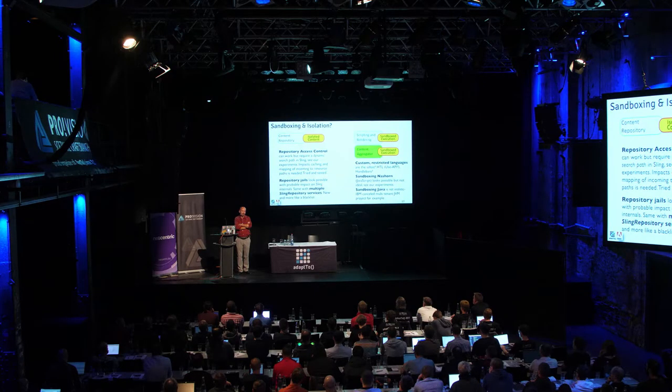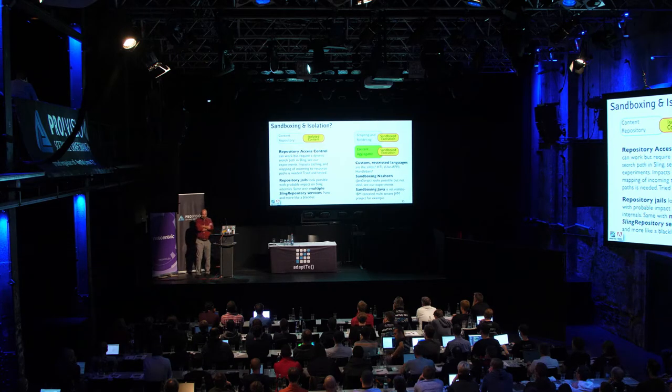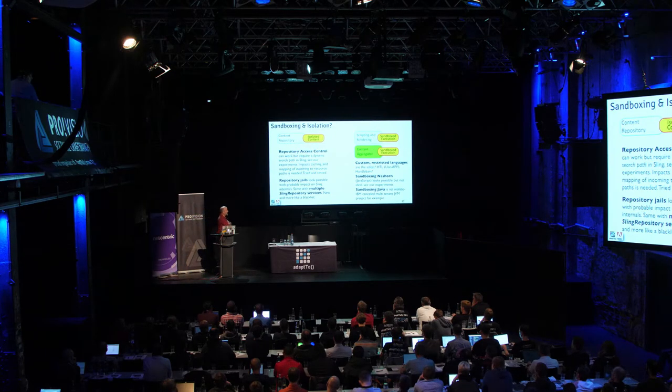I've also been looking at sandboxing Nashorn, the JavaScript engine in Java since Java 8. It's possible but not ideal — I'll show that in the experiments. Sandboxing Java: running hostile code from different people on the same JVM looks very dangerous. IBM had a project to create a multi-tenant JVM — that would have been fantastic, but they canceled the project. So this doesn't look like a realistic option. You could run multiple Sling instances each in their own JVM — the isolation is provided by the operating system — but the problem is it's not optimal in terms of resource usage. Every Java application loads its own copy of the classes, which uses memory, and you'd have multiple copies of heap, caches, and in-memory state.